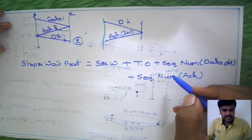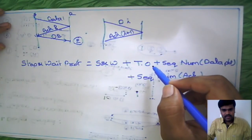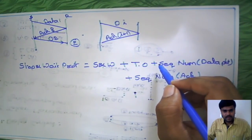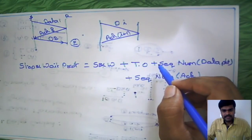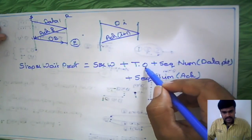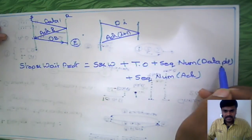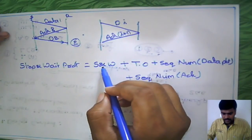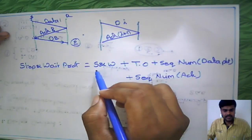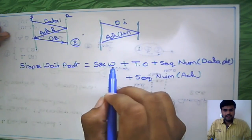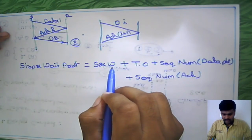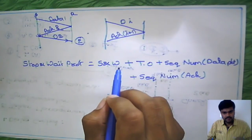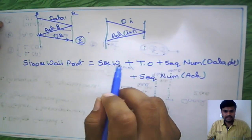In summary, with the basic Stop-and-Wait protocol we encountered problems during implementation. So we introduced the timeout concept, sequence numbers for data packets, and sequence numbers for acknowledgements. Combined with basic Stop-and-Wait, this forms the complete Stop-and-Wait protocol. We will see some numerical problems in the next video. Thank you for watching.